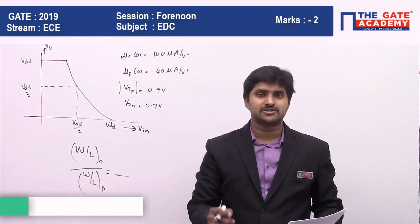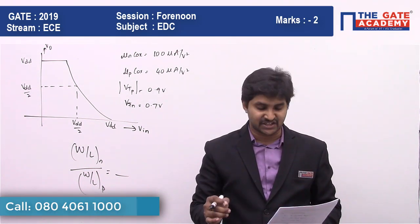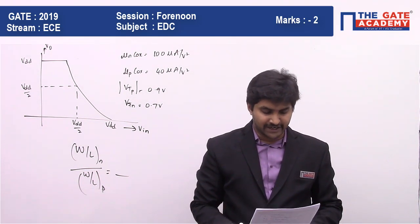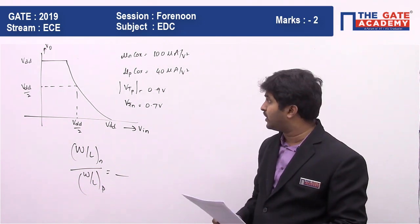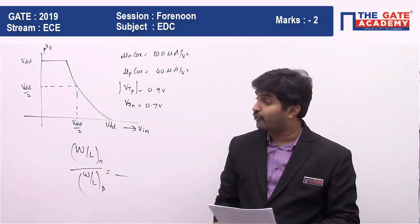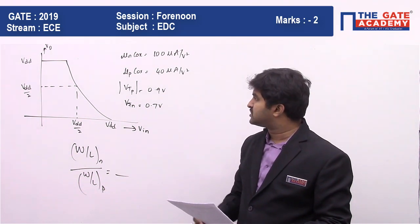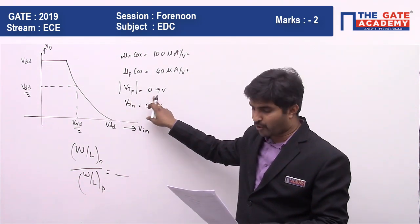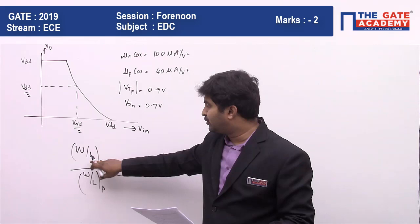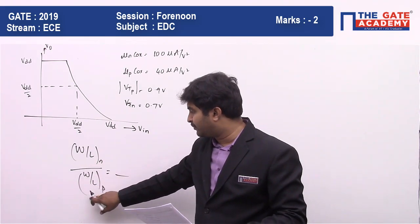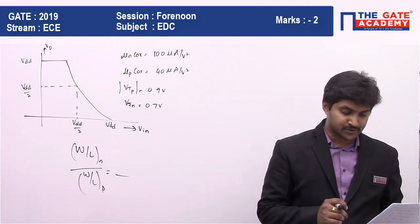Whenever this happens, both transistors PMOS and NMOS are going to work in the saturation region. Some data has been given: μN·Cox is 100 microampere per volt squared, μP·Cox is 40 microampere per volt squared, VTN is 0.7 volts, and magnitude of VTP is 0.9 volts. We have to find the ratio of (W/L)N divided by (W/L)P, with 3 decimal accuracy required.